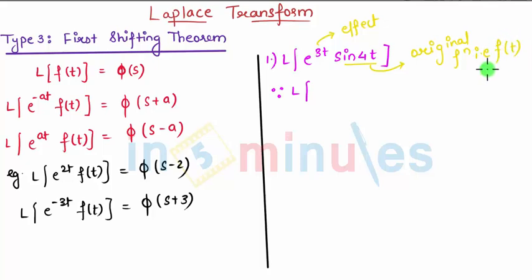So in this way we need to find Laplace of sine 4t first. So I can say Laplace of sine 4t is nothing but 4 upon s square plus 16.